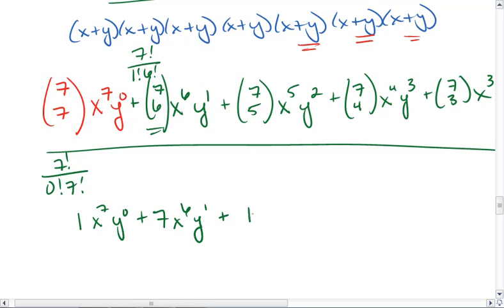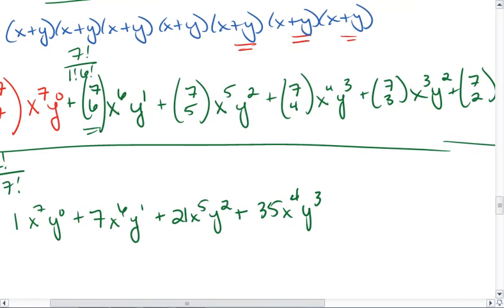Here I get 21 x to the 5th y squared, 35 x to the 4th y cubed, and then again 35 x to the 3rd y to the 4th—that was my fault.